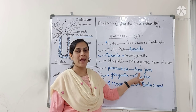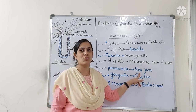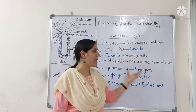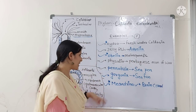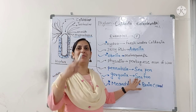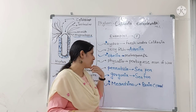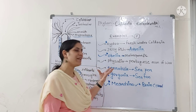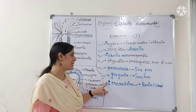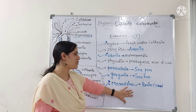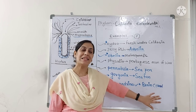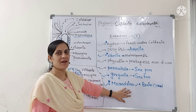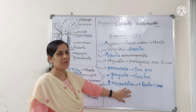Pennatula looks like the feather pen that people used to write with, so the name is given as sea pen. Gorgonia is also known as sea fan — you can remember it as 'go-go fan'. It looks like a Chinese fan, so the name is given that way. The last example is Meandrina, also known as brain coral, because it is a special example in cnidaria having an exoskeleton made up of calcium carbonate, making it a coral-forming cnidarian.